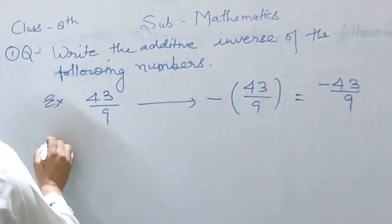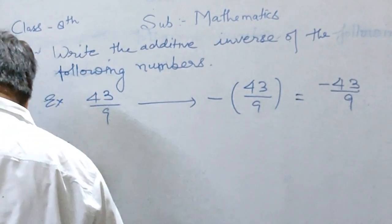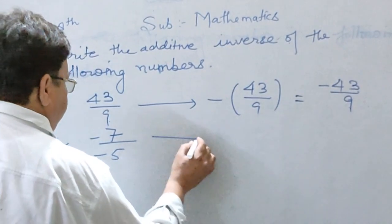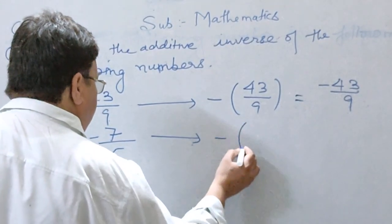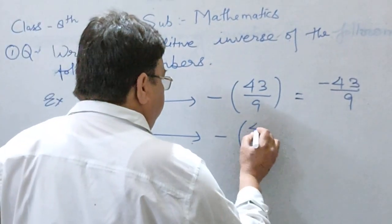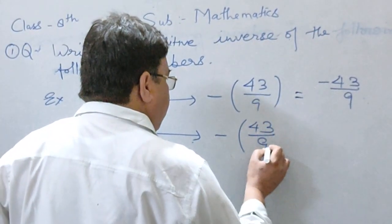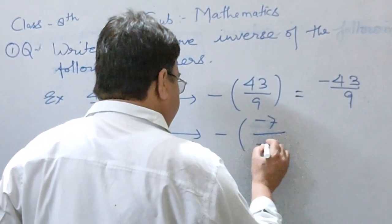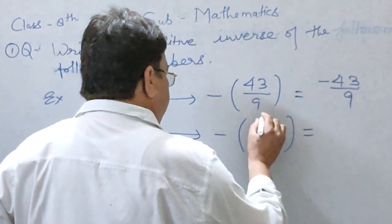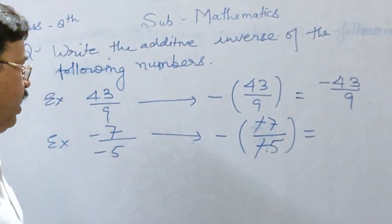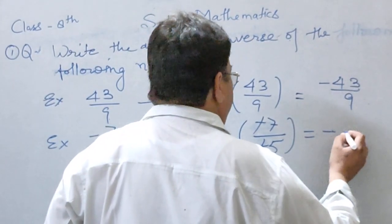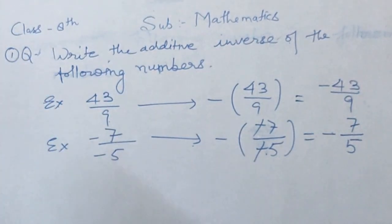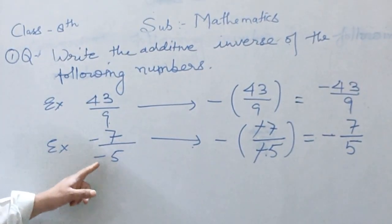This is the first example and now the second example. Minus 7 upon minus 5. Now put the minus sign before the number. Minus 7 by minus 5. Minus cancelled by minus. Now 7 by 5 is the additive inverse of minus 7 upon minus 5.